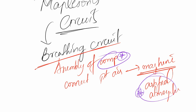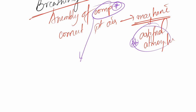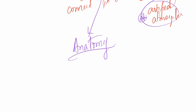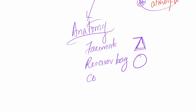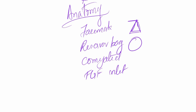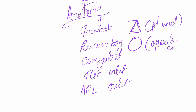Mapleson circuits have a specific list of components. Looking at the anatomy of the circuit, there is a face mask, denoted by a triangle. Then we have a reservoir bag, a corrugated tube connecting the face mask to the reservoir bag, a fresh gas flow inlet, and an outlet — called the APL, or adjustable pressure limiting valve, or expiratory valve. The face mask is at the patient end, the reservoir bag at the operator end, and the FGF outlet and APL are variable in position.